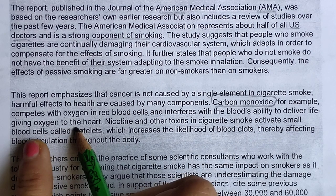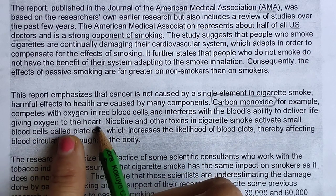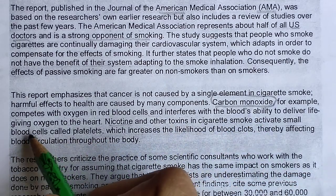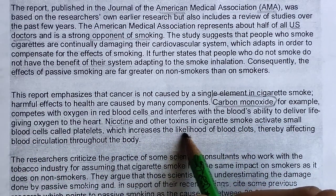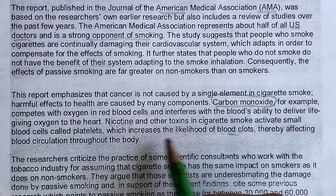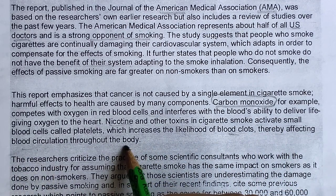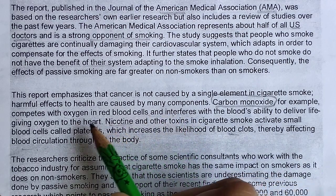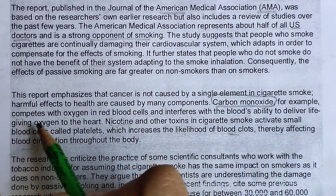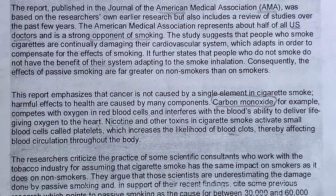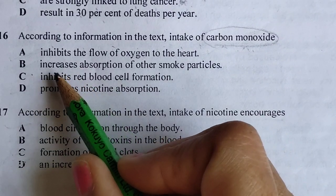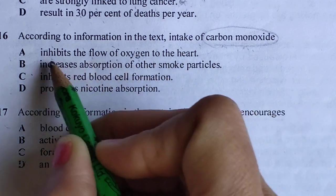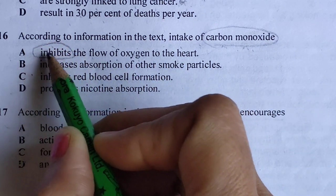Carbon monoxide, for example, competes with oxygen in red blood cells and interferes with the blood's ability to deliver life-giving oxygen to the heart. It is disturbing the heart. Nicotine and other toxins in cigarette smoke activate small blood cells, which increases the likelihood of blood clots, thereafter affecting blood circulation throughout the body.